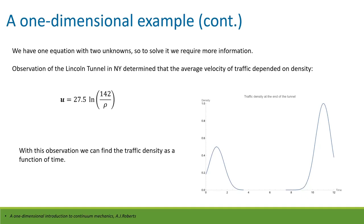That relationship means we can combine it with the mass continuity equation and essentially solve for traffic density and velocity as a function of time and space given some initial conditions. I've plotted the traffic density at the end of the tunnel as a function of time — it has peaks, maybe in the morning. This is the kind of output of the system. This is a great example because it's one-dimensional and it's a continuous limit of what we know to be a discrete system.